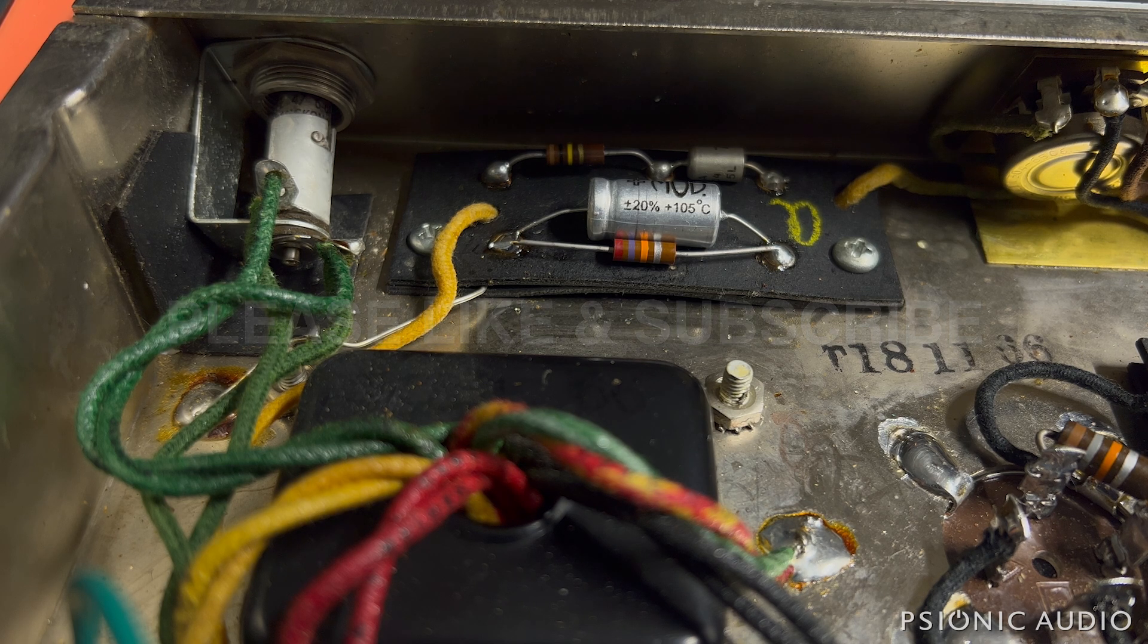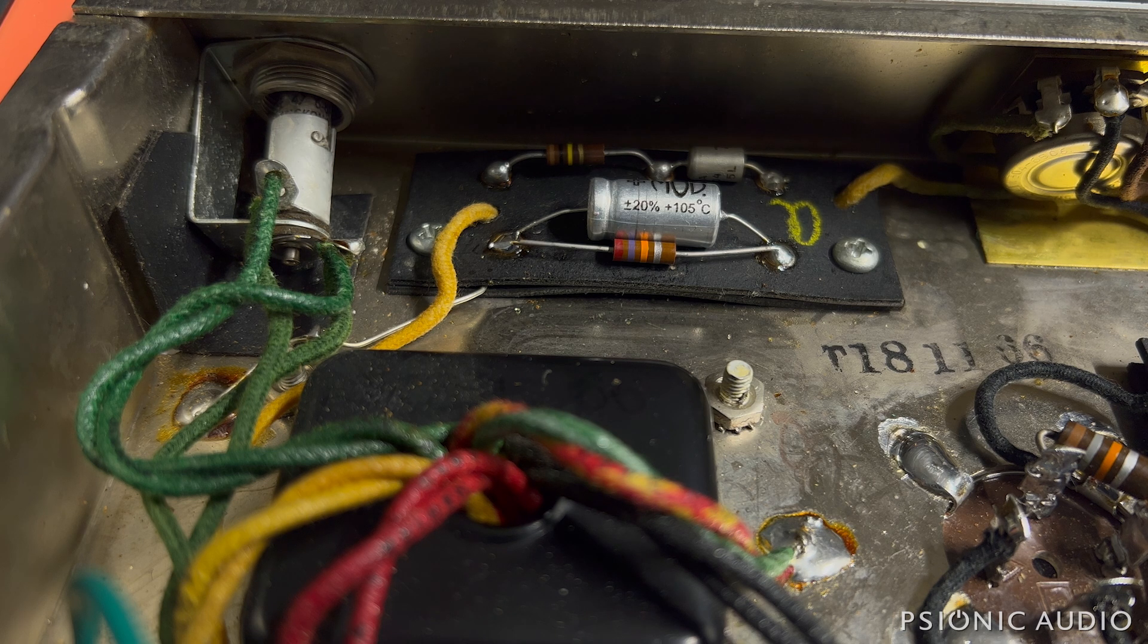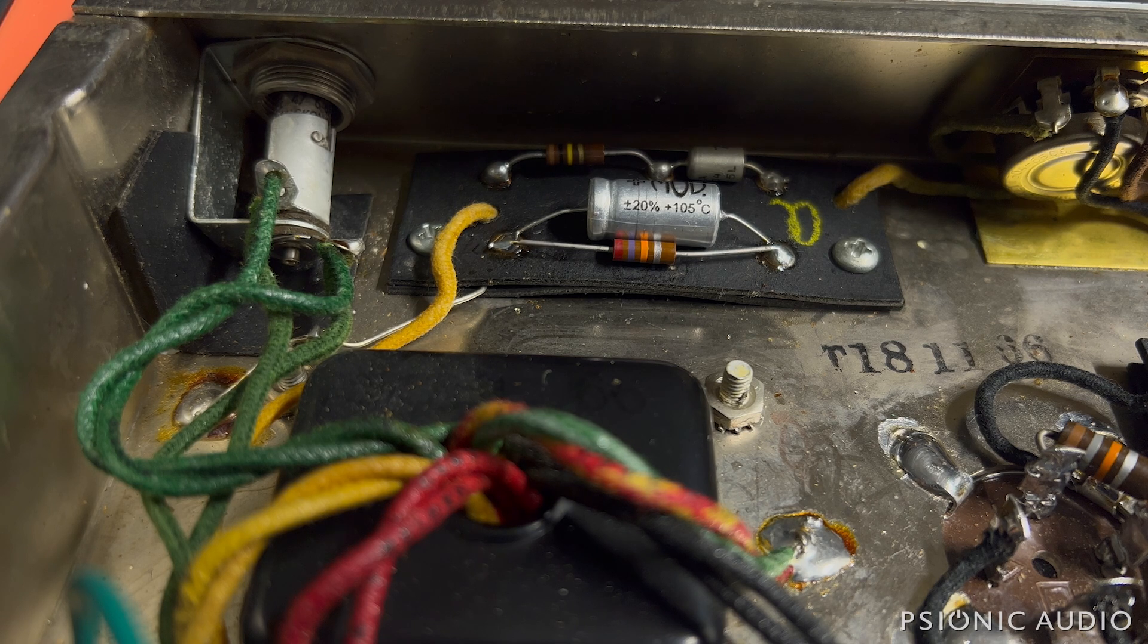But in an amp like this where everything's pretty much original, it's nice to keep as much as possible either original or in the original spirit. Princeton does not need to have fine-tuned bias. A little bit on the cool side is ideal for the way the cathode tremolo works.